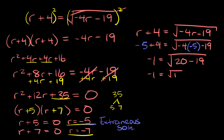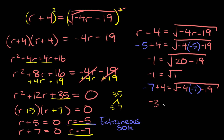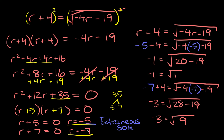Now let's check negative 7. Plugging in: negative 7 plus 4 is negative 3 on the left. On the right: negative 4 times negative 7 is 28, and 28 minus 19 is 9, so we get the square root of 9. Is negative 3 equal to the square root of 9? No — the square root of 9 is positive 3. So negative 7 is also an extraneous solution. Neither solution worked, so this equation has no solutions.